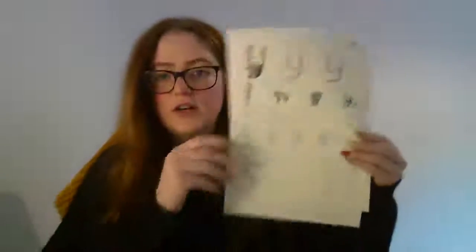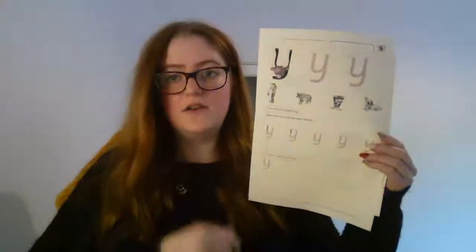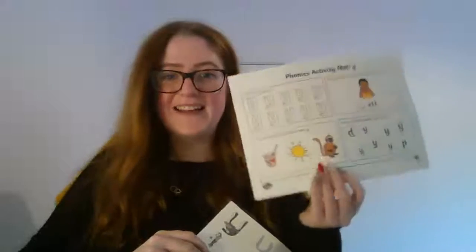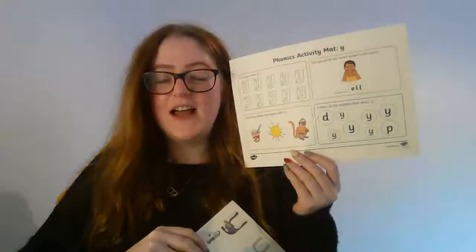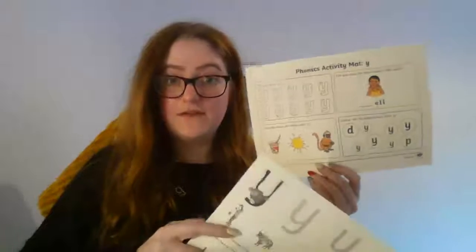You've still got your knowledge organisers, so please just keep looking through those. Then phonics — Set 1: you've got the 'y' sound today. You've got your little letter formation sheet, then keep doing it upside down, and then you've got your activity mat to go through.